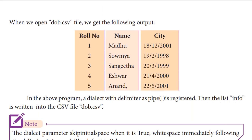When we open the dob.csv file, we get the following output. In the above program, a dialect with delimiter as a pipe is registered. The list info is written into the CSV file dob.csv. First we register the delimiter, and after that all the list info is written into the CSV file with that delimiter.